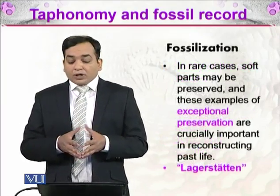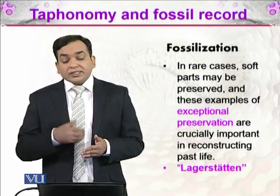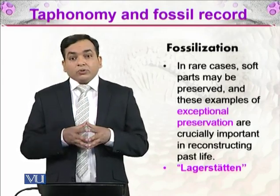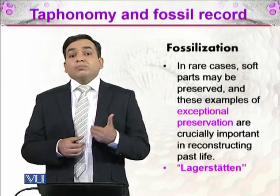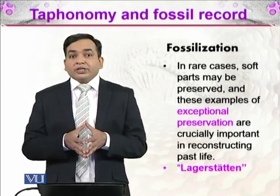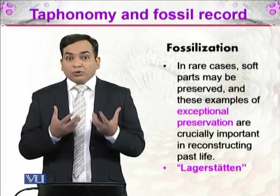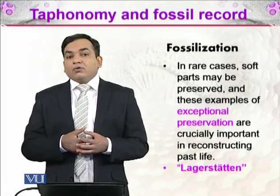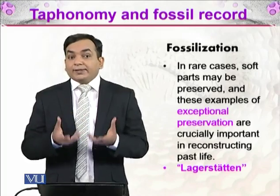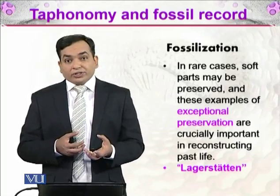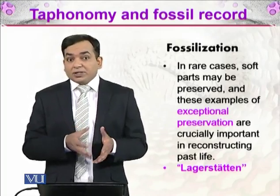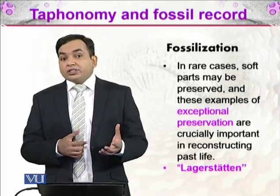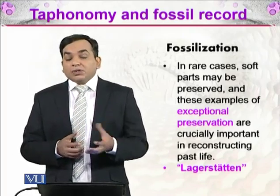In rare cases, soft parts may be preserved, and these are examples of exceptional preservation — not something that happens every day. These are crucially important in reconstructing past life. When soft organisms are preserved, they tell us much more information because they are the basis of life. For example, the first organisms to make life were single-cellular organisms, which cannot normally be preserved well, so if such fossils are found, they are very ancient and give us much more information.